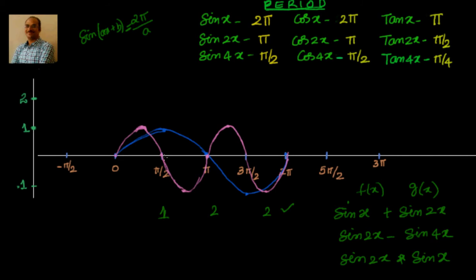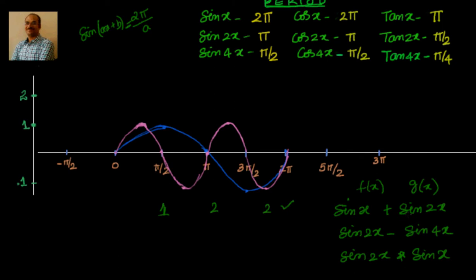Every point on the pink curve gets added to the blue curve. When pink is zero the sum stays the same; where blue is large the value goes up, and where it's negative you go down — the shape changes but the period remains 2π. So for any two trigonometric functions f(x) and g(x), the period under any arithmetic operation — addition, subtraction, multiplication, or division — is the LCM (common integral multiple) of both individual periods.